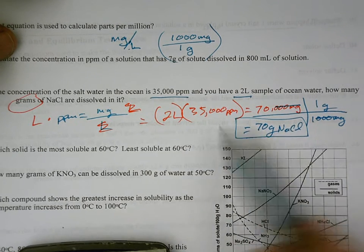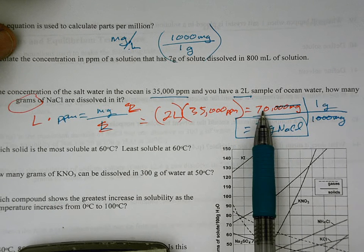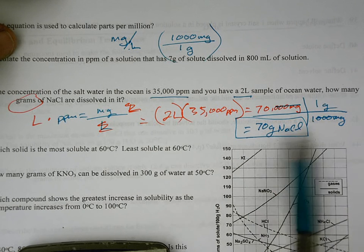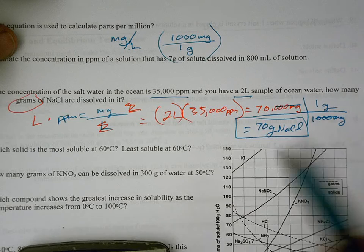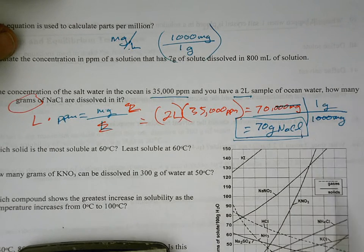So, again, on this problem, you could have gone through and gotten 70,000, and there's probably a test choice that says 70,000, and you'd have marked that, not realizing that you needed to convert it into grams. So just be careful with that.